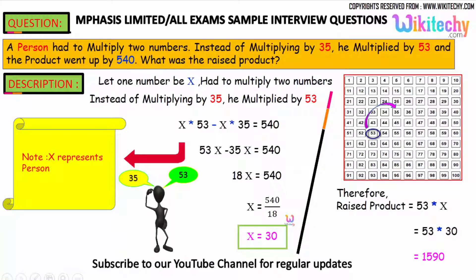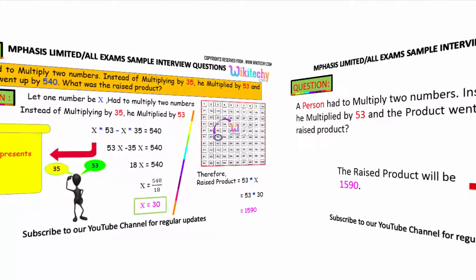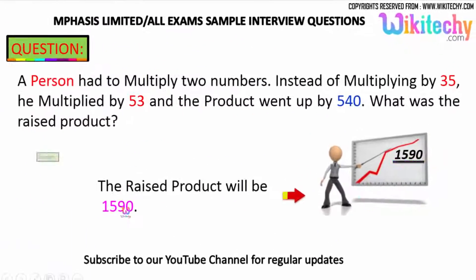And the less product value is 30 into 35, 35x. You will get it. So the raised product value is 1590. That is the answer.